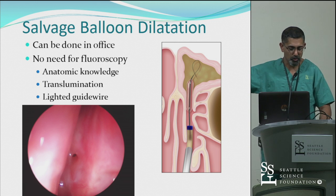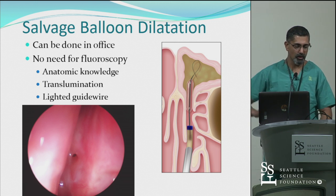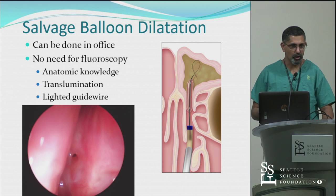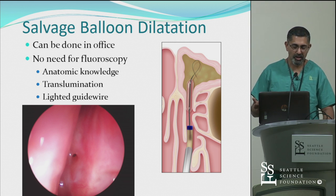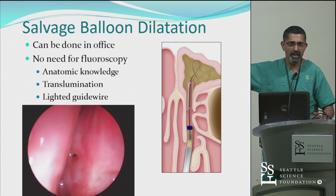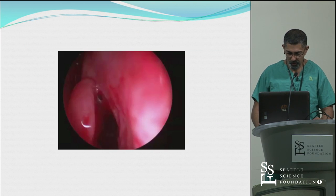Nowadays we don't use fluoroscopy anymore. The guide wire and the light — or the probe and the light — are very useful confirmatory tactics, but you almost don't even need that. You know where this hole is. You've been following it every three months for two years.